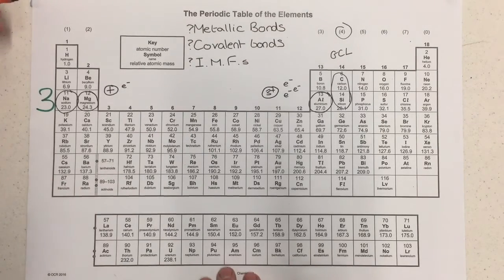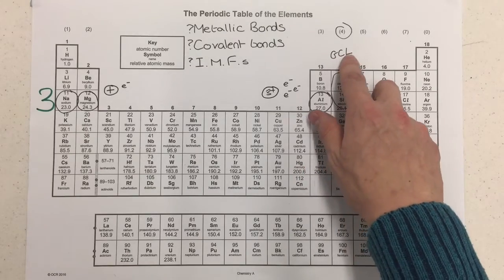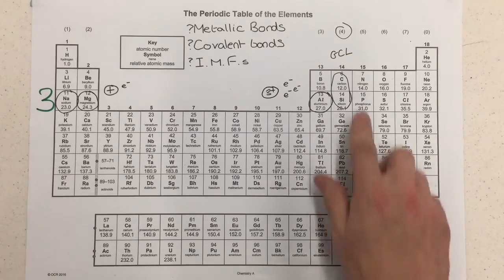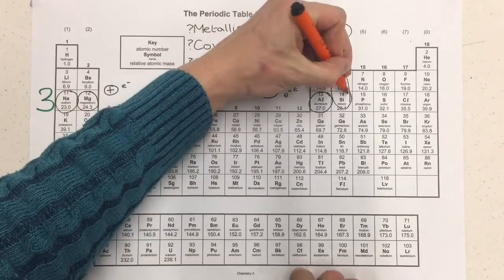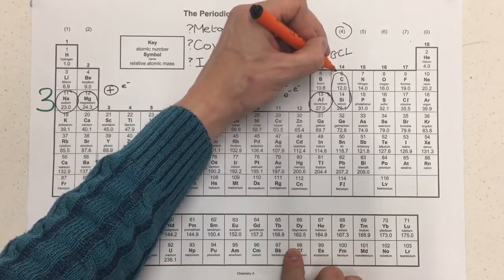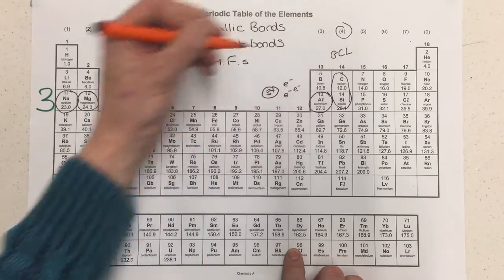A lattice is a regular and repeating pattern of whatever the context requires. For metallic bonding, a lattice was a regular and repeating pattern of positive metal cations surrounded by a sea of delocalized electrons. For silicon, it's a giant covalent lattice — a regular and repeating pattern of silicon atoms in covalent bonds extended throughout, bond after bond after bond. In fact, silicon has the same type of tetrahedral structure as carbon does in diamond.